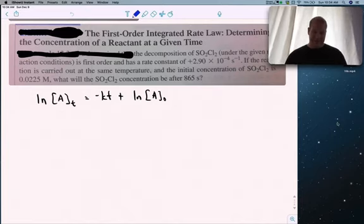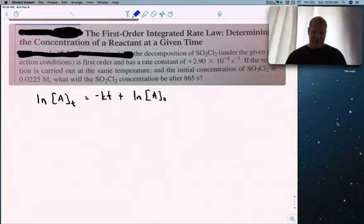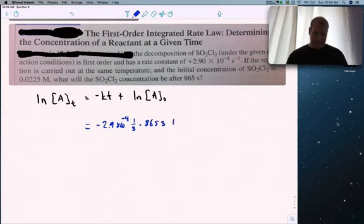Decomposition of SO₂Cl₂ is first order with rate constant 2.9 times 10 to the minus fourth inverse seconds. If the reaction is carried out at the same temperature with initial concentration 0.0225 molar, what will the concentration be after 865 seconds? We have the first order integrated rate law.